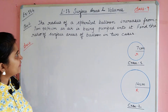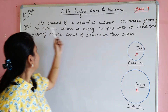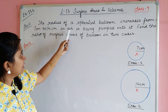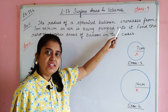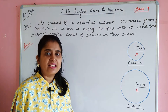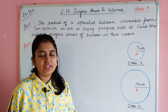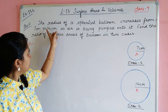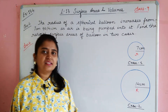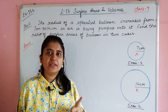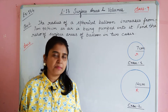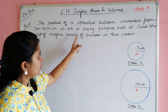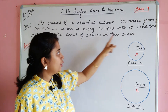The radius of a spherical balloon increases from 7 cm to 14 cm as the air is being pumped into it. Find the ratio of surface areas of the balloon in the two cases.